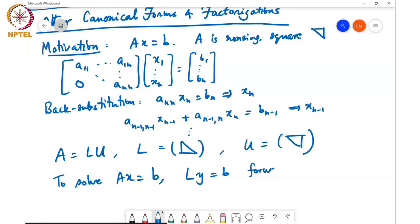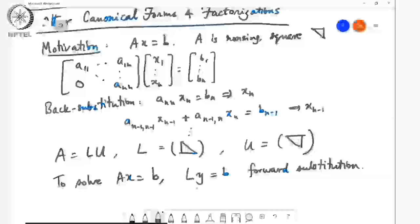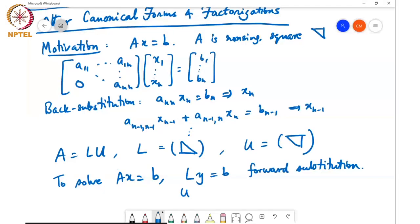And then once you have found Y, you solve U X equals Y. This is backward as I did because U is the upper triangular. So if I can find the factorization of A in the form LU, then I can solve A X equals B using these two forward and backward substitution steps.